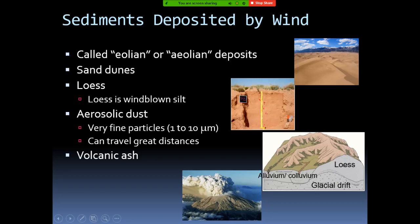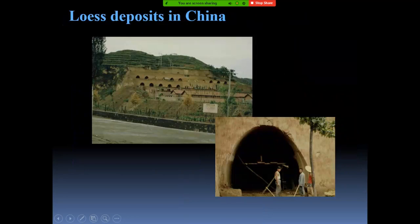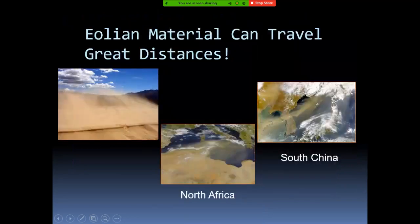Even volcanic ash is considered a deposit that can be carried by winds. You can see different landforms like sand dunes and loess hills, and loess deposits in China. Aeolian dust can travel for very long distances — even moving from one continent to another — simply because the particles are light in weight and can be carried by winds.